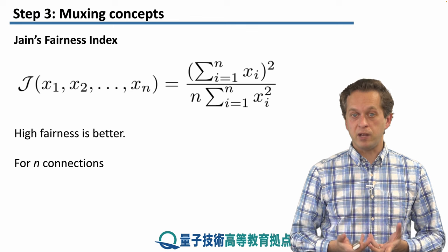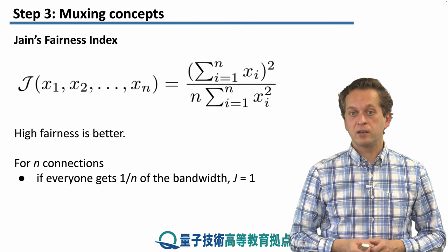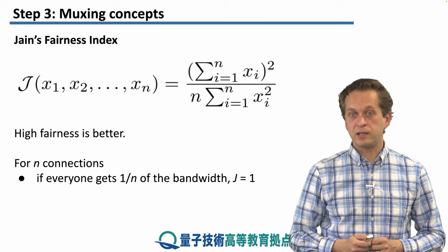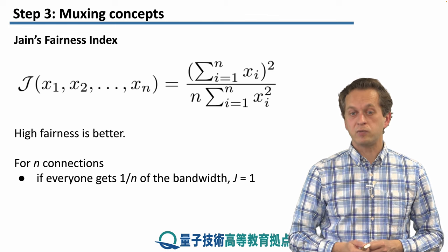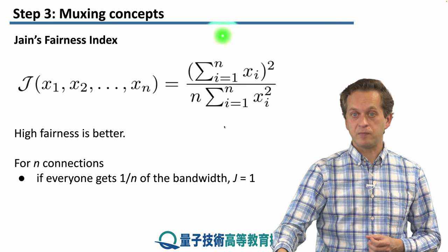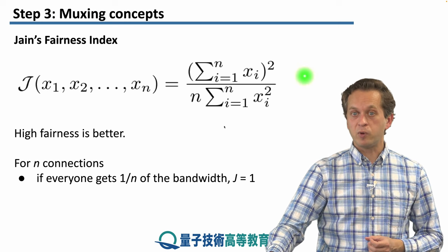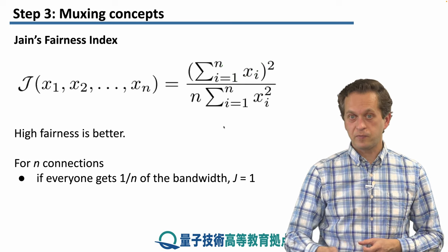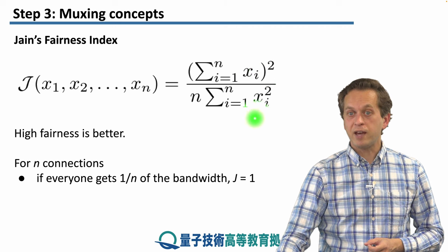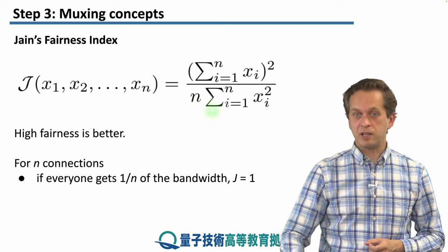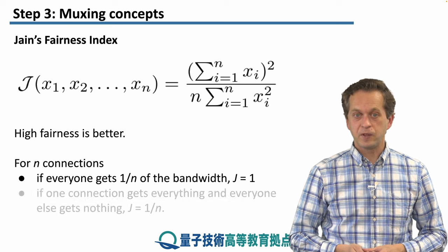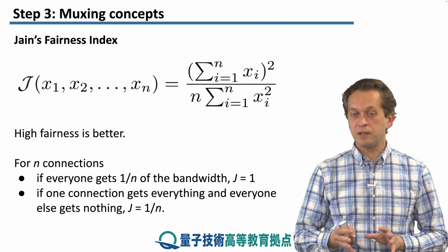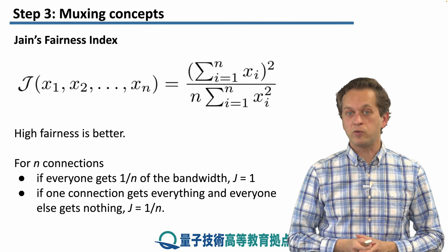For example, if we have n connections and we assign every connection 1/n of the bandwidth, then Jain's fairness index equals 1, as we can verify by substituting back in. At the top we have n times 1/n, which equals 1, and 1 squared is 1. At the bottom we have n times (1/n)² times n, which is also 1. On the other hand, if one connection gets everything and everybody else gets nothing, then J will be equal to 1/n.